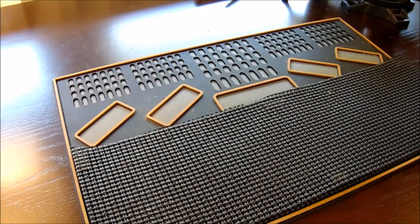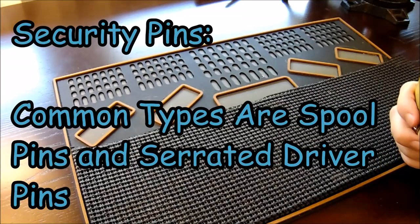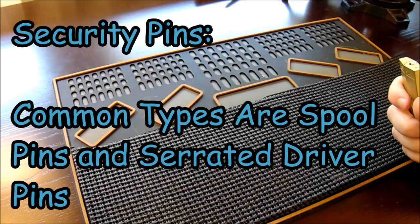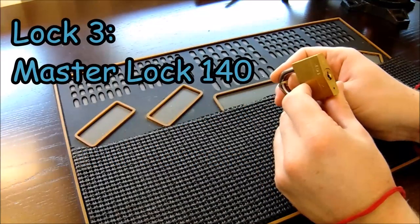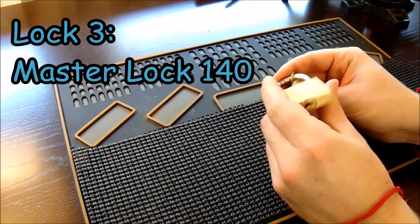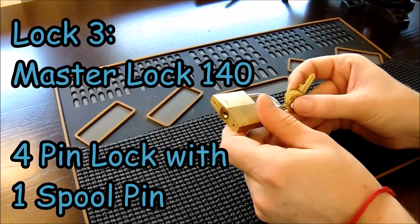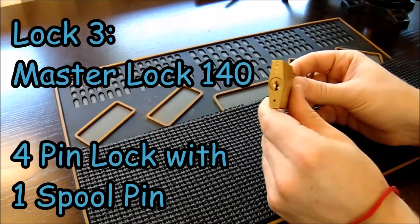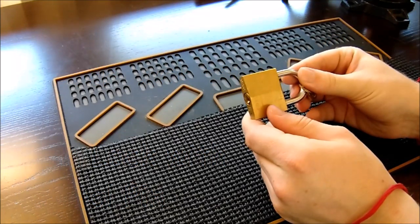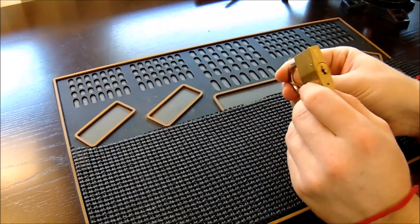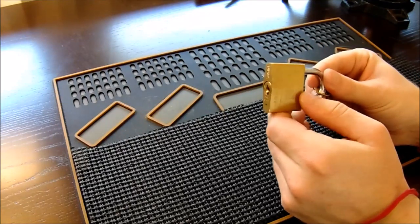Now, we're going to be moving into locks with some security pins, which is a topic we'll get into more detail down the road. But common security pins are spool pins and serrated pins. This Master Lock Model No. 140 is the third lock on the Progressive Lock List. And this lock is a four-pin lock, and it contains one spool. This spool isn't very difficult to set and should not trip you up, and you should be able to get this lock open at this point. This lock has some pretty loose tolerances and isn't too bad to get open.